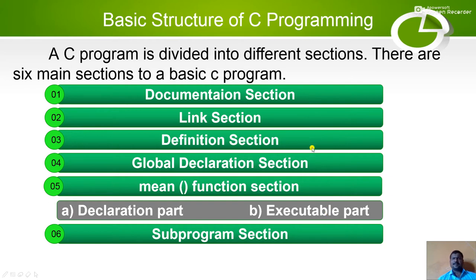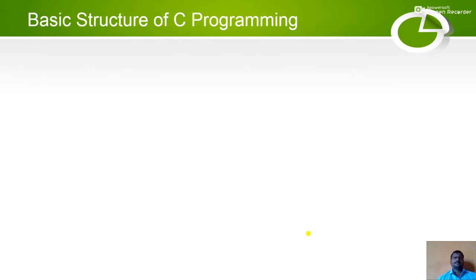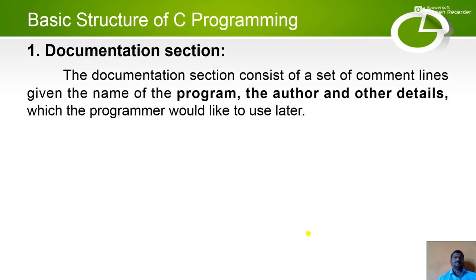Let's go to understand each section one by one. Section number one: the document section. The document section consists of a set of comment lines giving the name of the program, the author, and other details which the programmer would like to use later.